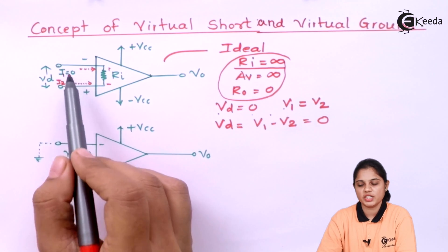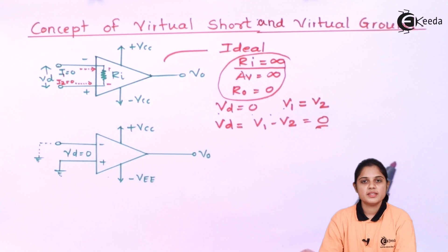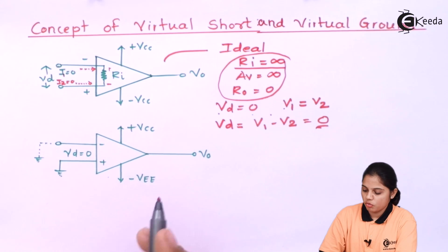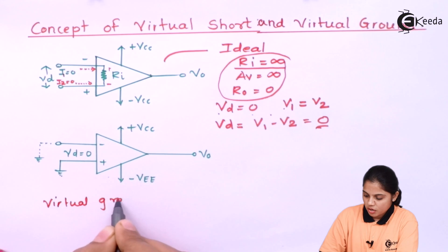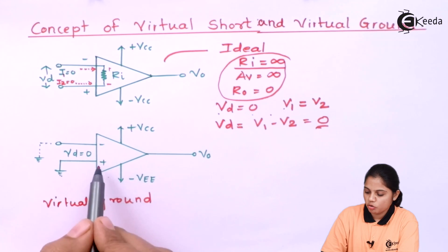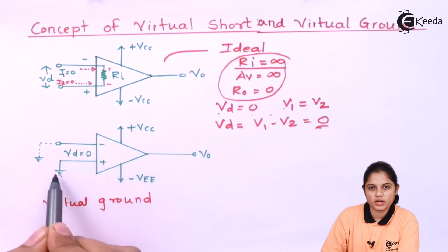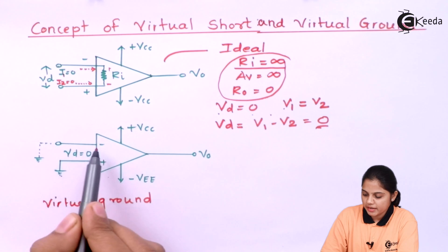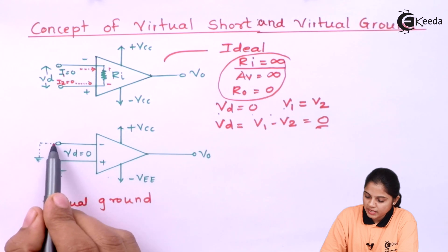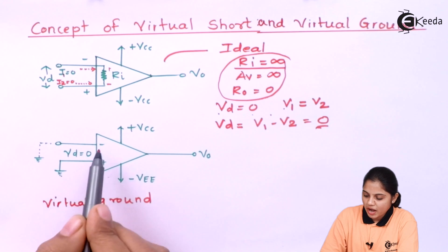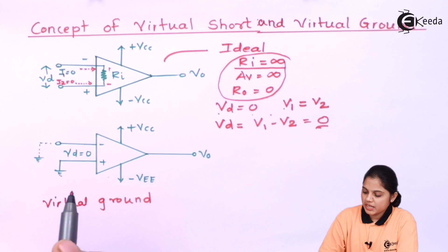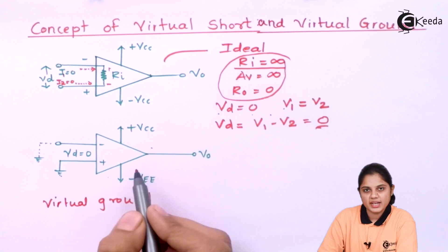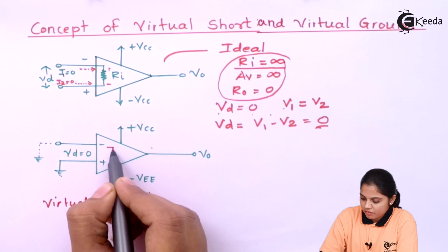Now, what is virtual ground? Here you can see that the non-inverting terminal is connected to ground, and the second terminal is also shown virtually connected to ground, indicated with a dotted line. If one of these two terminals is grounded — remember, again assume this is an ideal op-amp — then Ri will be infinite.